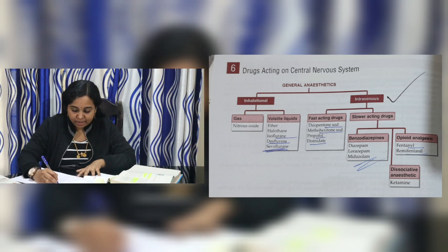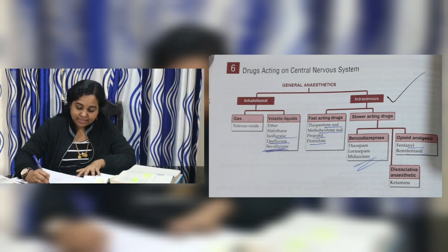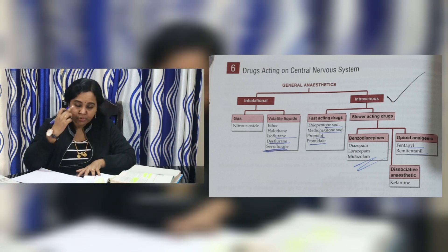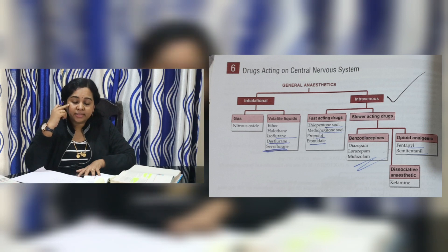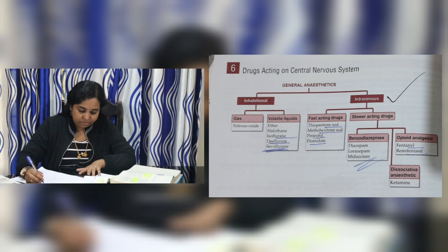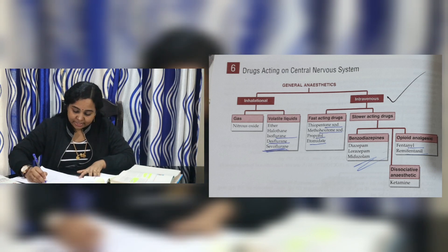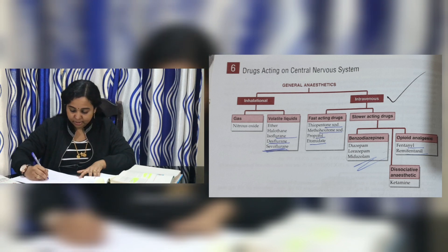For Intravenous Anesthetics, we classify them in two ways: fast-acting drugs and slower-acting drugs. The slower-acting drugs are further classified into three groups.